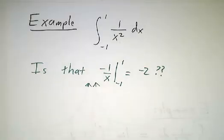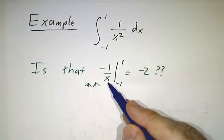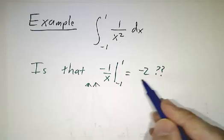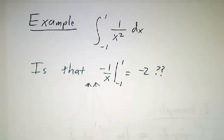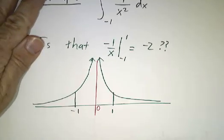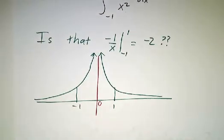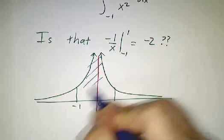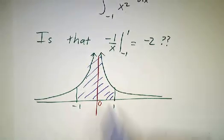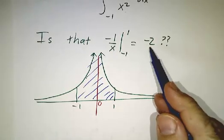The antiderivative of 1 over x squared is minus 1 over x. You plug in 1 and minus 1 and you get negative 2. But you know that can't be right. Because if you draw a picture, this integral represents the area in this region. And that area is positive. There's no way the answer should be negative 2.